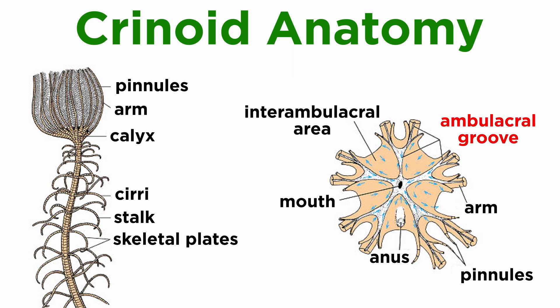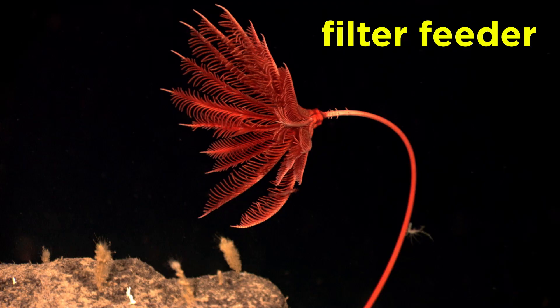On the oral surface there is a series of five ambulacral grooves that branch out into additional arms. The margins of the grooves contain tube feet that run the length of the arms and transport food into the dorsal mouth. As such, the crinoids are passive filter feeders that obtain nutrients from the surrounding water column, using their pinnules to capture food and bring it into the ambulacral grooves.